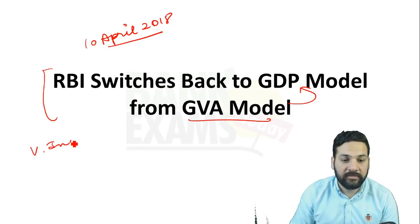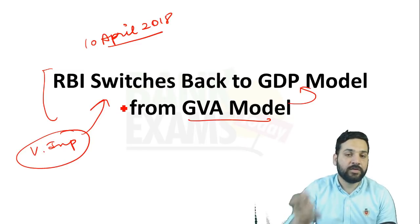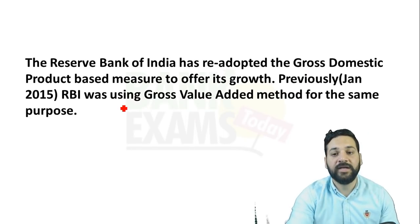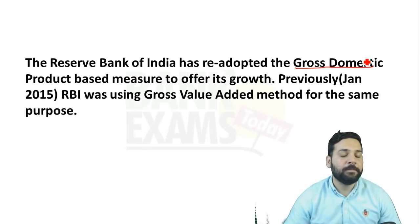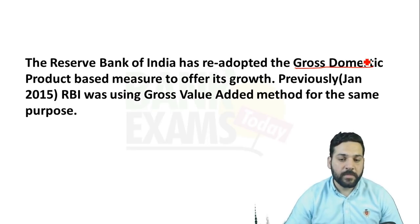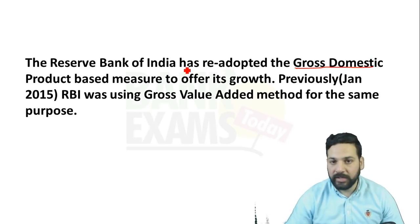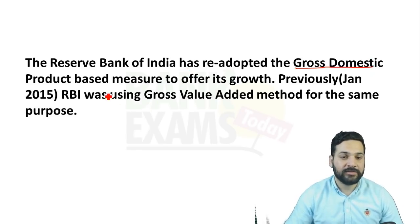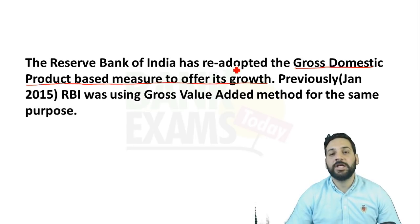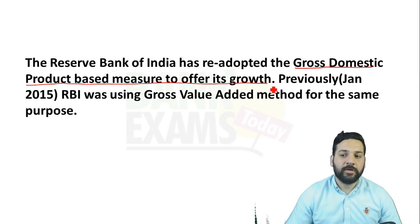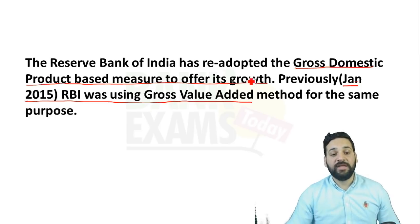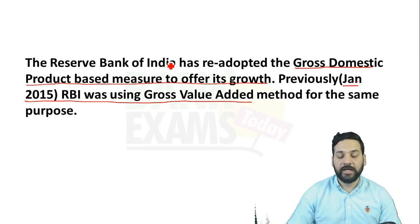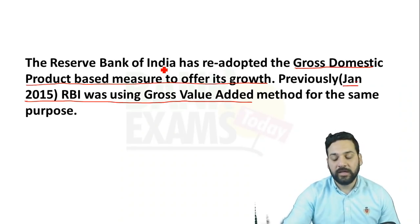This is a very important question in itself — that RBI switched back from GVA to GDP model. The Reserve Bank of India has readopted the GDP-based measure to offer its growth estimates. During the bi-monthly monetary policy review, the RBI provides the expected growth rate for the next quarters and years. From 2018, they will provide this on the basis of GDP. Previously, from January 2015, RBI had started using the Gross Value Added method for the same purpose, but now RBI has switched back to GDP.